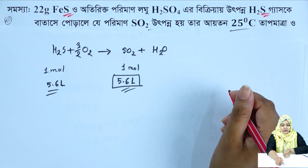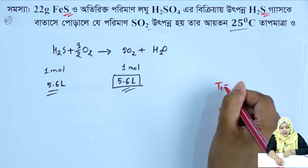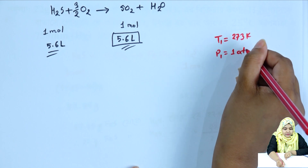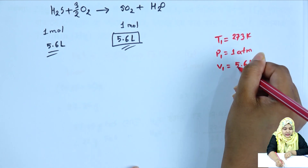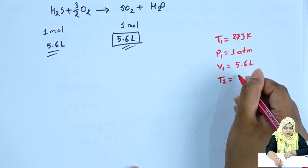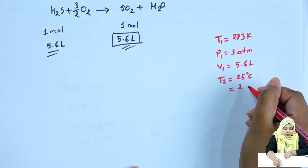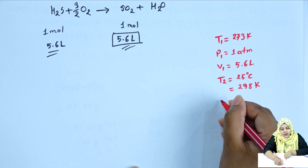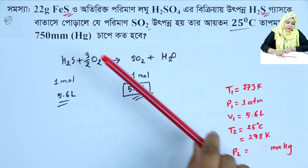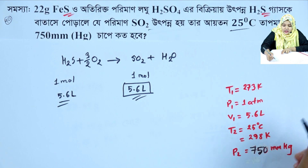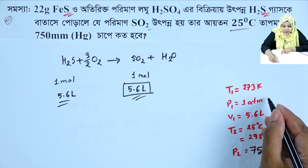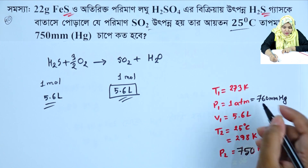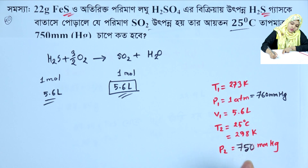T1 equals 273 Kelvin, P1 equals 760 mmHg, V1 equals 5.6 litres. T2 equals 25 degrees Celsius, converted to 298 Kelvin. P2 equals 750 millimetre. Both pressures must be in the same units, so we use 760 and 750 millimetres.